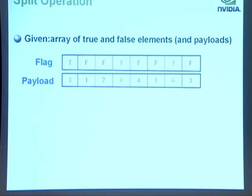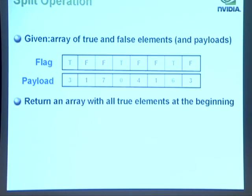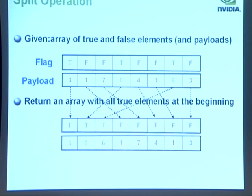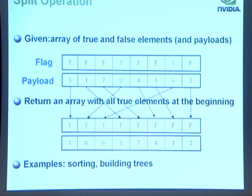Moving to the split operation: given an array of true and false elements with their payloads, we want to resort those so all true elements are at the beginning and all false elements at the end. This is useful in algorithms like sorting or building trees and other data structures.